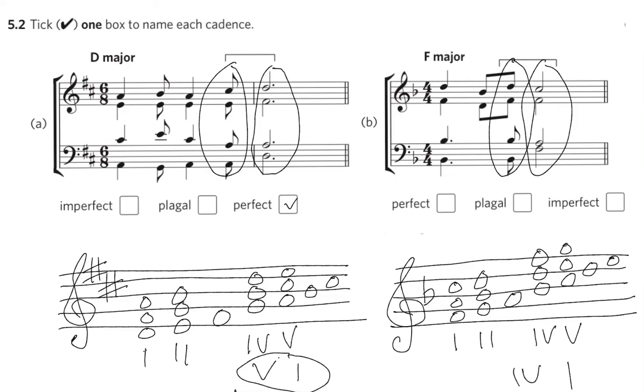Chord IV contains all those notes. And therefore, this is a IV-I cadence, which is a plagal cadence. So tick the answer, plagal, and there we have it.